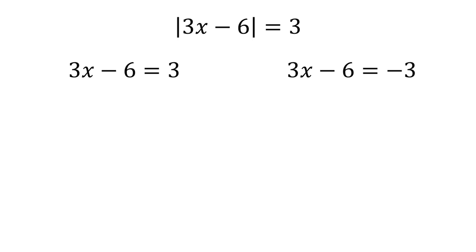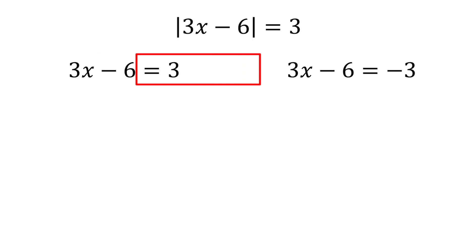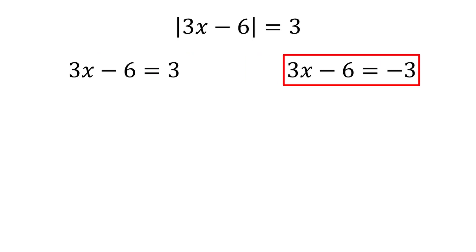If 3x minus 6 was equal to positive 3, the absolute value would have no effect, and the equation would be true. If 3x minus 6 was equal to negative 3, the absolute value would change negative 3 to positive 3, and the equation would still be true.